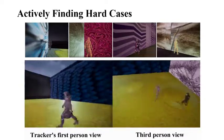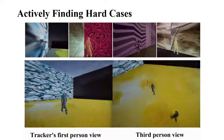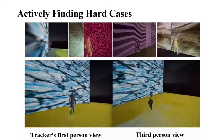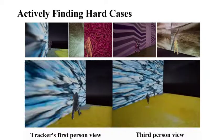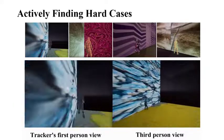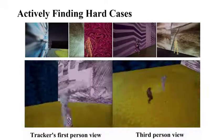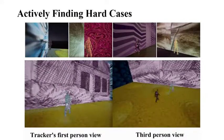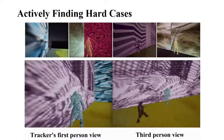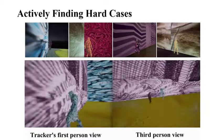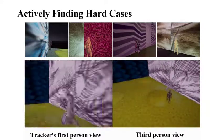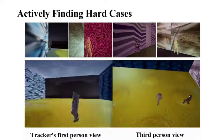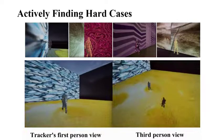The target is more inclined to run to an area where the background closely matches its own texture, using a camouflage effect to confuse the tracker. After being constantly stumped, the tracker eventually learned to adapt to these situations.